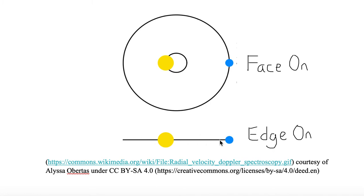From your point of view looking at this video, that's your line of sight. From your line of sight, something that's orbiting like the bottom image is edge-on, whereas the one that's orbiting on the top is face-on.